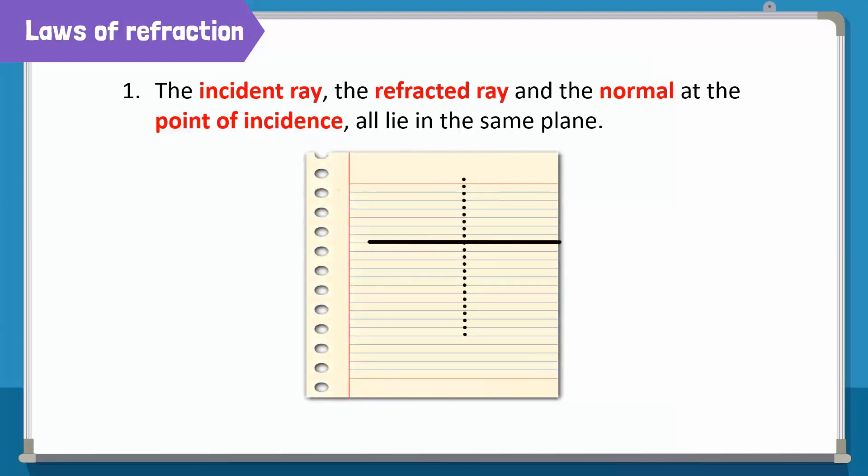For example, here, since the incident ray lies on the paper, the refracted ray must also lie on the paper. It cannot point into or out of the paper.